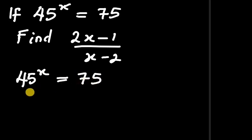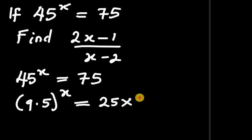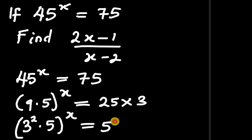Now, 45 is actually 9 times 5, so we have 9 times 5, all to the power of x, equals 75, which is actually 25 times 3. Then 9 is 3 to the power of 2, so we have 3 squared times 5, all to the power of x, equals 25 — which is 5 squared — times 3.